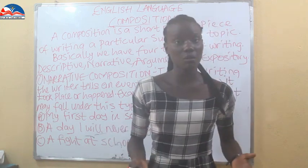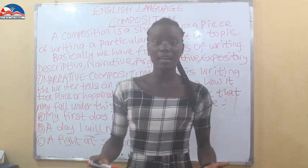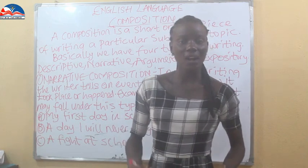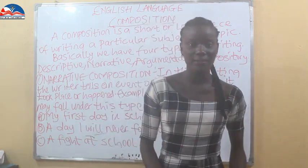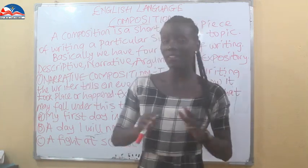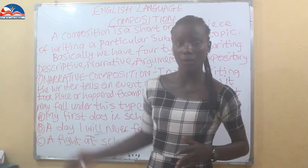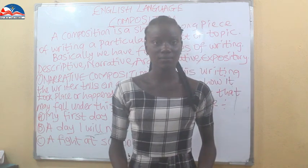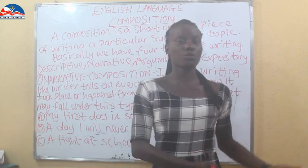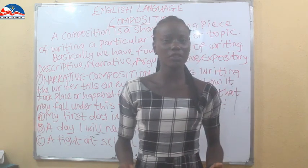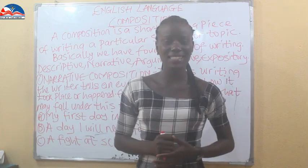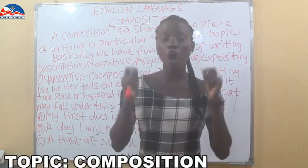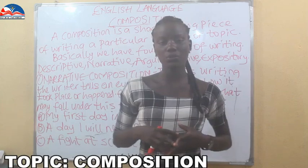Another example is 'A fight at school' — what happened, what brought about the fight, and who was involved. We also have 'An armed robbery attack I witnessed' and 'How the bank was robbed.' When writing a narrative essay, you are going to explain and talk about how an event happened or took place.